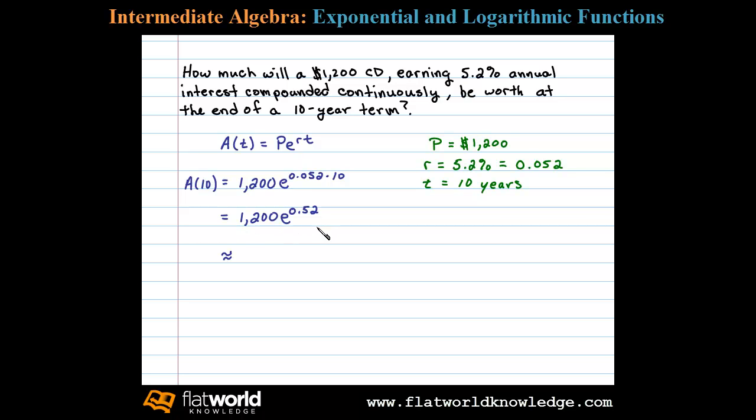Now we can approximate this on a calculator and since the answer is going to be dollars, we want to round off to two decimal places. Doing that I get $2,018.43. So at the end of the ten year term, the CD will be worth $2,018.43.